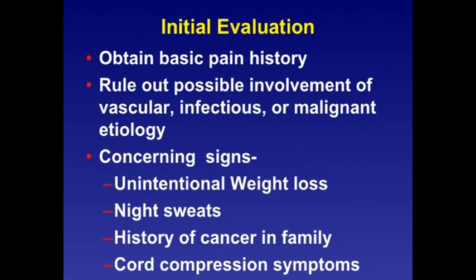For initial evaluation, it is very important to start with a basic pain history that should include the duration and onset of pain, and rule out possible involvement of vascular, infectious, and malignant etiology. Pay attention to concerning signs such as unintentional weight loss, night sweats, history of cancer in the family, and cord compression symptoms.